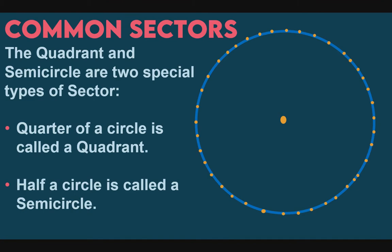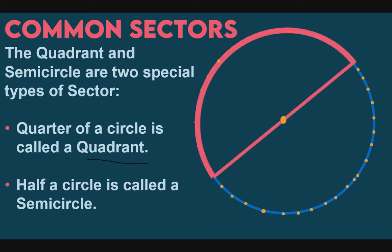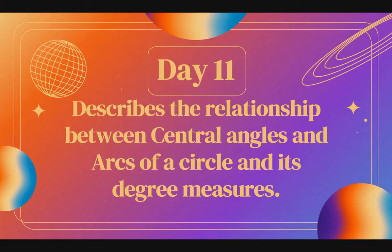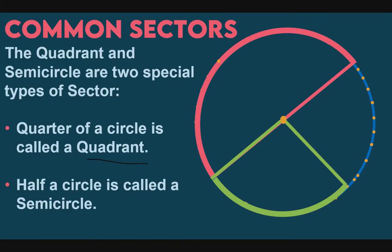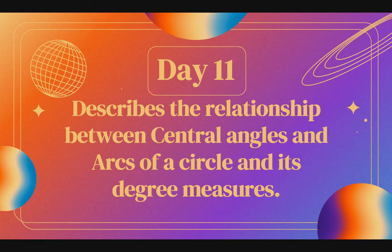Next, common sectors. The quadrant and semicircles are two special types of sectors. A quarter of a circle is called a quadrant and a half circle is called a semicircle. So there it is — half is a semicircle, quarter is a quadrant. The green is the quadrant and the red is the semicircle.